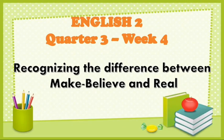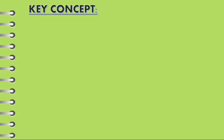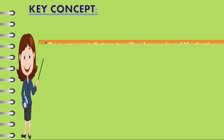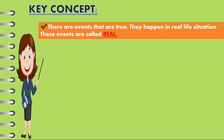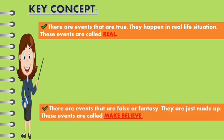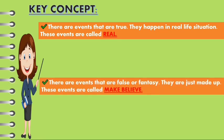Today, our topic is about recognizing the difference between make-believe and real. To start with, we have here the K-Concept. There are events that are true — they happen in real-life situations. These events are called real. And also, there are events that are false or fantasy or unbelievable. They are just made up. These events are called make-believe.